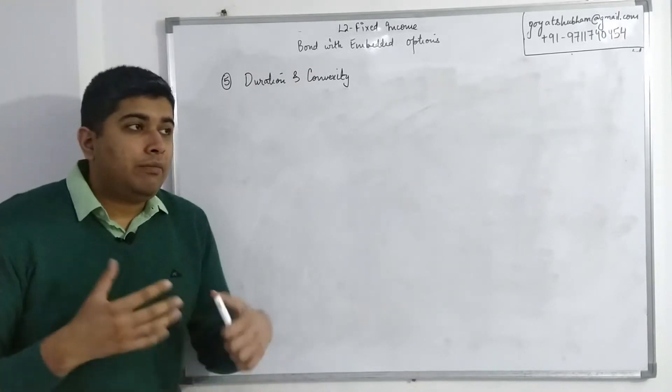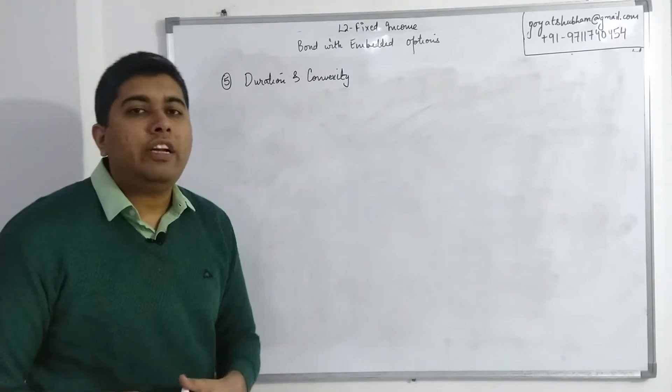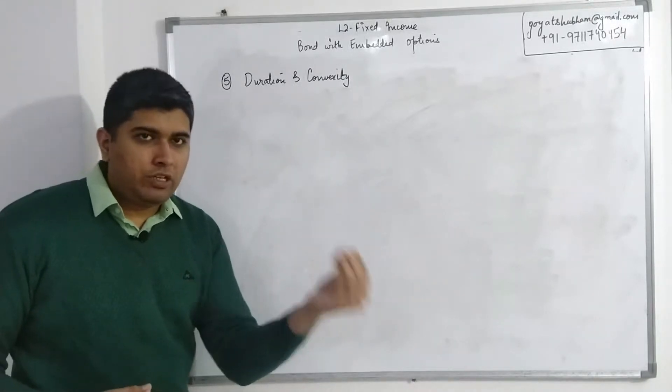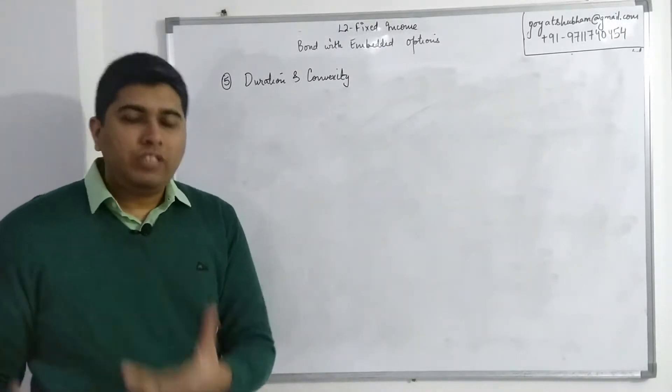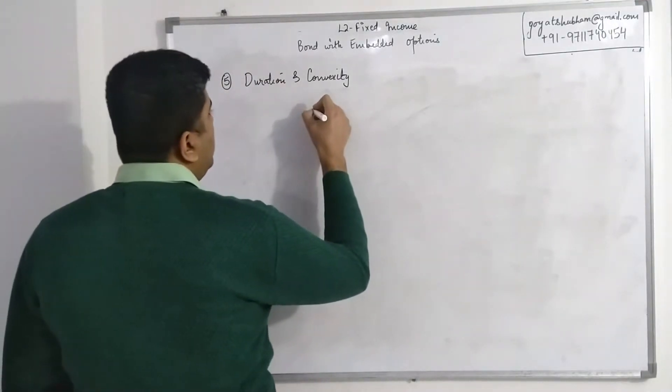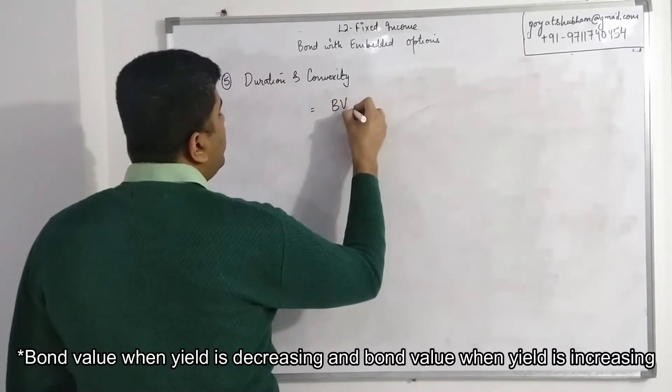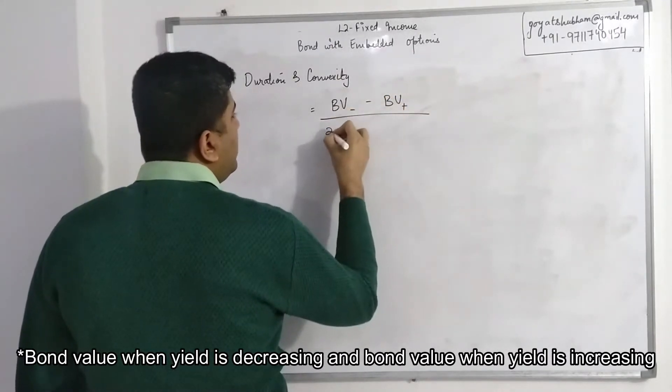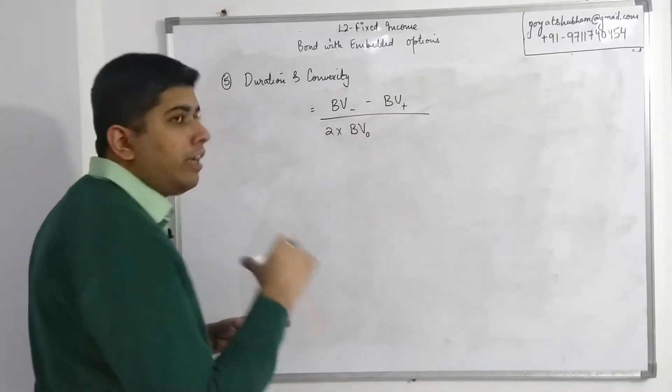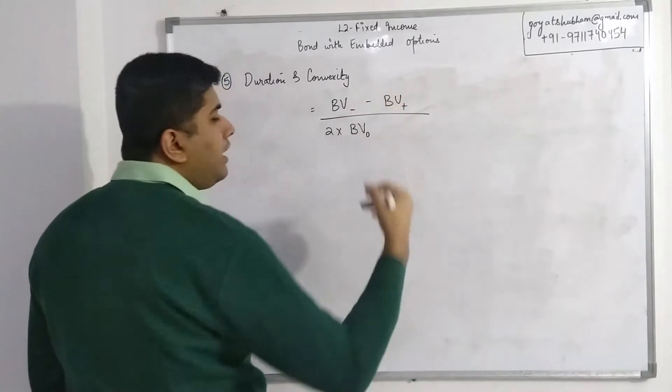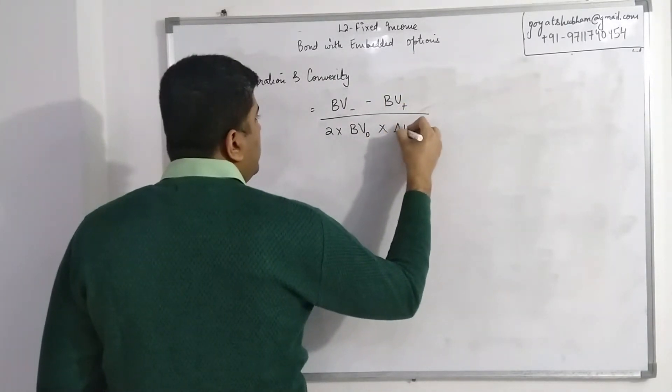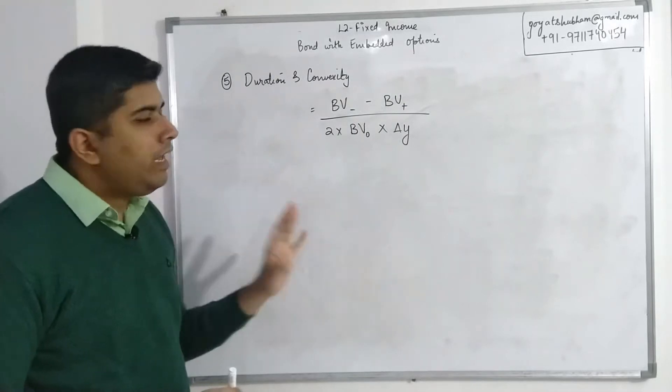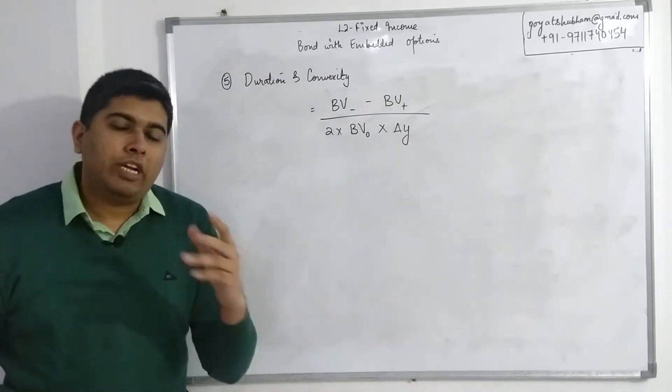At Level 1, if you remember, duration was a measurement of how a bond reacts to the change in interest rate, sort of measuring how risky a bond is. Duration would give us an idea that if yield changes by a certain percentage, how much would the bond change. The calculation of duration formula was: bond's value when the duration is decreasing minus bond's value when the duration is increasing, divided by twice into bond value at a base level, multiplied with change in yield. Change in yield was something that was given in basis points.